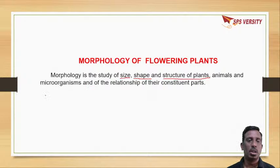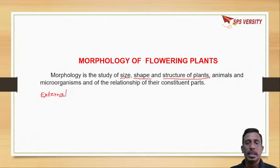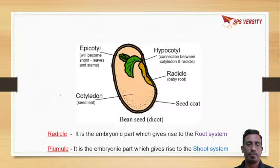The study of external features - for example, if you take a plant, that is roots, stem, leaf, flower - these all are external features which we can see with our naked eye. So if you take a flowering plant, it starts with a seed.